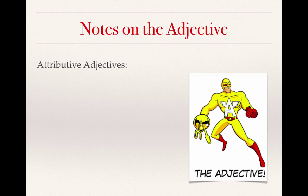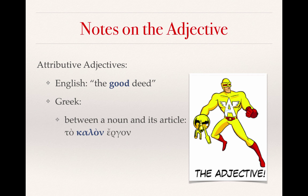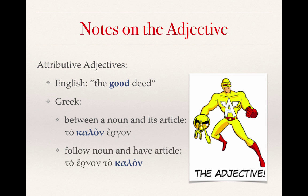Attributive adjectives attribute or describe something — in English, 'the good deed,' specifying what kind of deed it is. In Greek, we see this in two ways: the adjective kalon may appear between the noun and its article, as in 'ta kalon ergon,' where ergon is nominative and kalon agrees in number, gender, and case. Or the adjective may follow the noun and have an article of its own: 'ta ergon ta kalon.' The presence of the article is key.